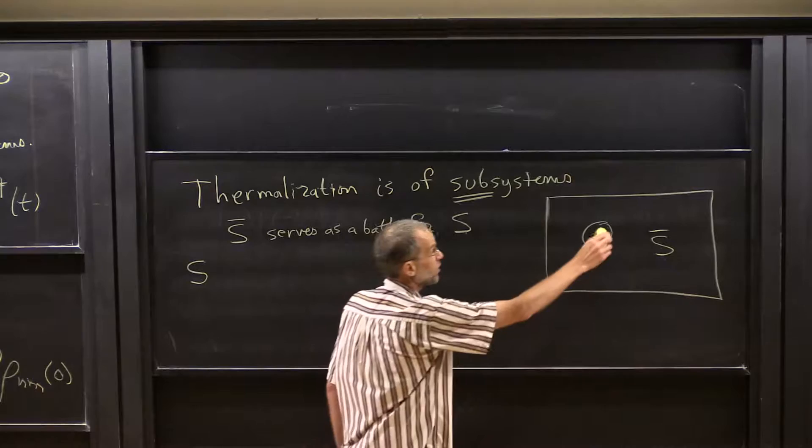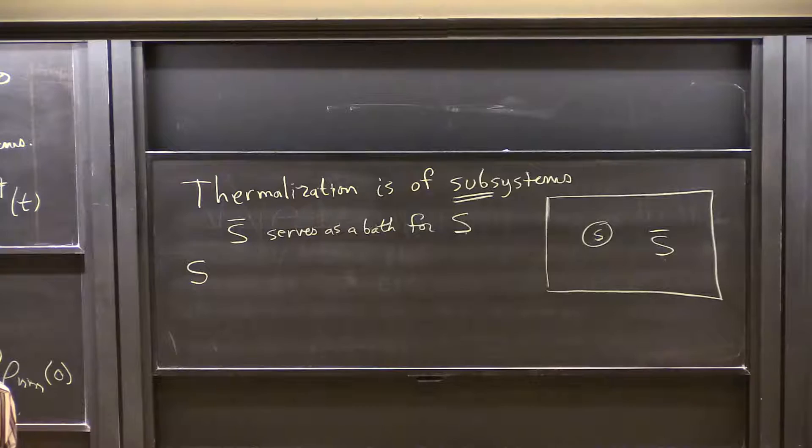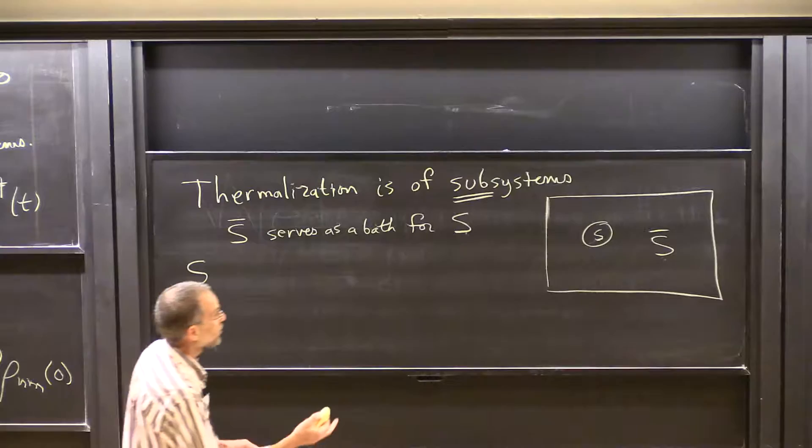What's often done when you think of a subsystem and a bath is you weakly couple the bath to the subsystem — I do not want to do that. My bath and my subsystem are strongly coupled. But only at the boundary. I'm not going to do what's traditionally done, which is assume it's weak and break the Hamiltonian into three terms: the subsystem, the bath, and the coupling. Because I want to treat the case where that's not helpful, where none of them are small.